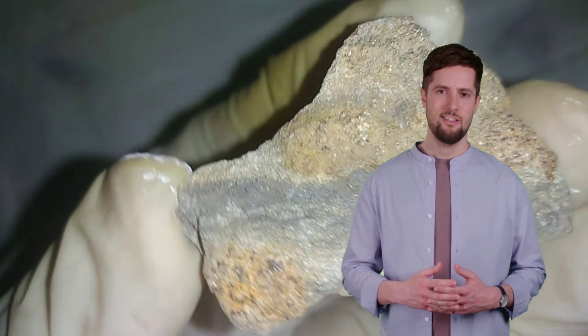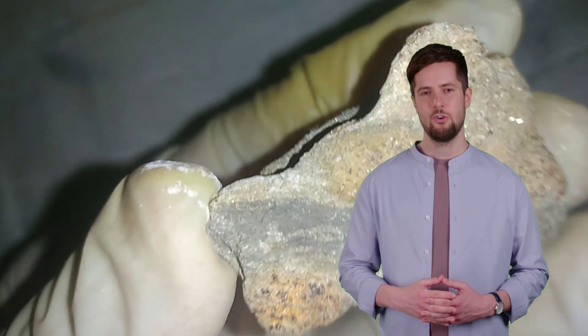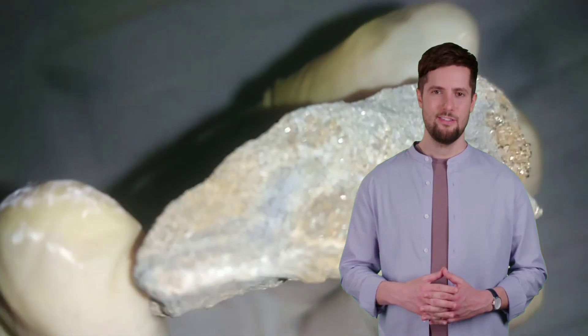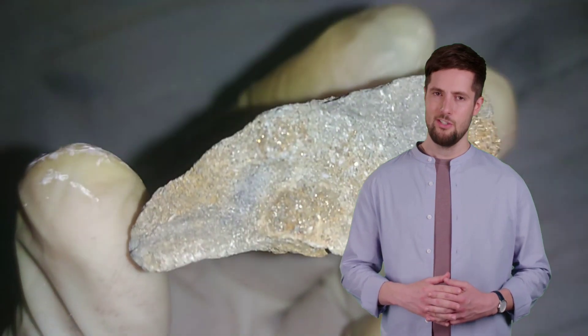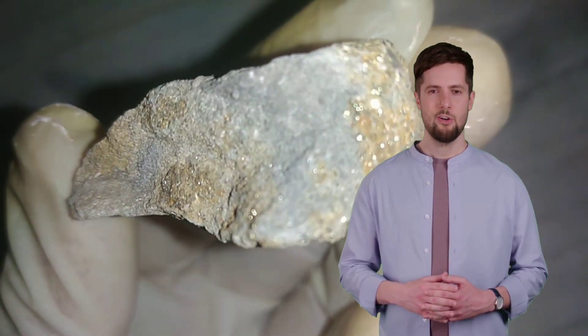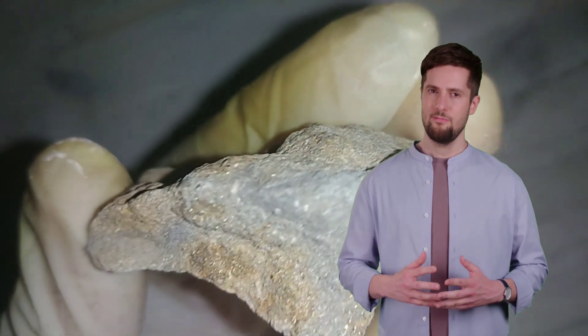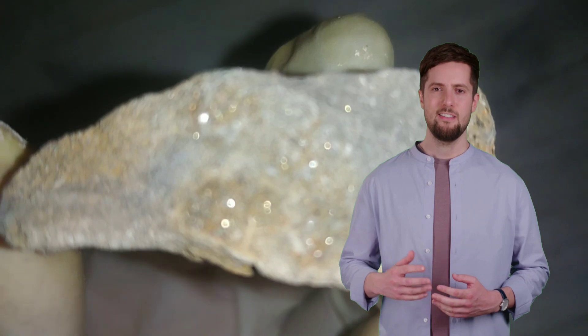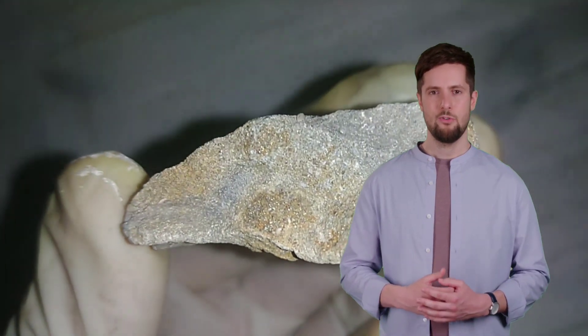The first step in extracting gold from gold-bearing rocks is to break them down into smaller pieces. This is typically achieved through crushing and grinding processes. The rocks are initially crushed into smaller fragments using crushers. This increases the surface area of the material, making it easier to extract gold from the rock matrix.